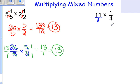11 over 1 times 1 over 4 equals 11 over 4. We have to change our improper fraction to a mixed number. We know that 4 can go into 11 two times, with the remainder of 3, and the denominator stays 4.